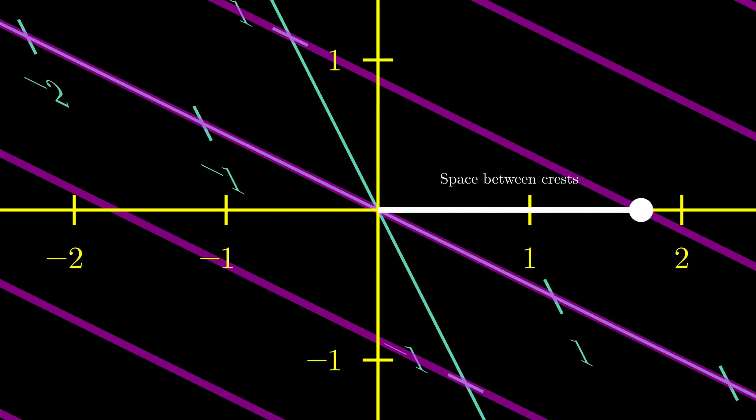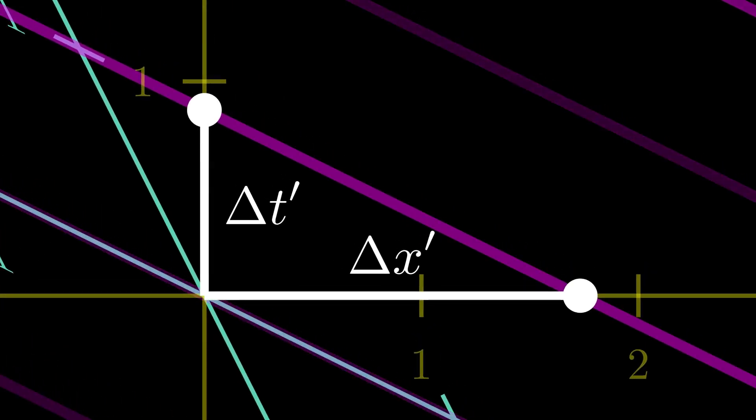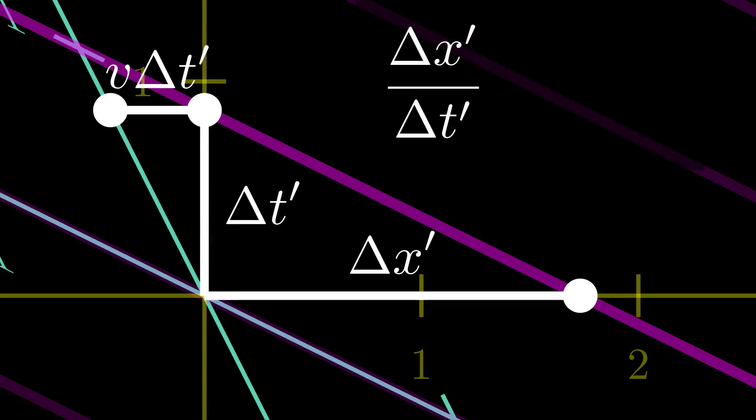Delta X prime is the distance between two waves. Delta T prime is the time between two waves. And this line is the distance traveled by a phase wave during one interval. Using similarity of the triangles, we get this relation.